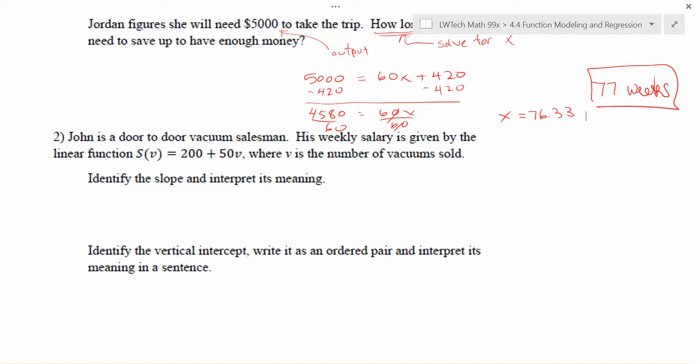In problem number two here, we're kind of working the other way. This time they did give us a function, and they're asking us to make and interpret some values here. In this case, we have John as a door-to-door vacuum salesman. His weekly salary is given by the linear function S of V equals 200 plus 50V, where V is the number of vacuums sold. In this case, notice, let's go ahead and think about what our variables are for just a second. If we're dealing with a function, we're going to have an input and an output. If you look at your function notation here, it's always f of our input. So our input in this case is V, and V, it reports, is the number of vacuums sold. Our output is S of V, and this is reported as his weekly salary. So knowing what those variables represent is helpful and important as we go through.